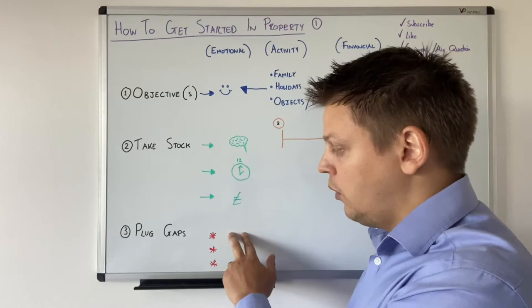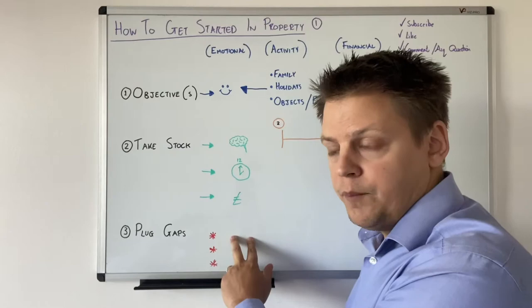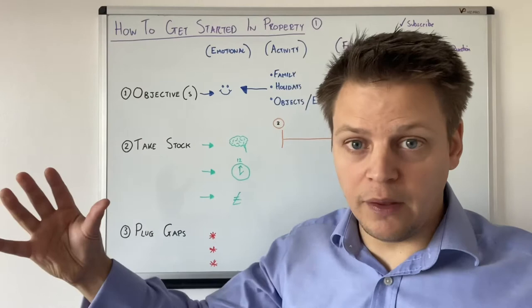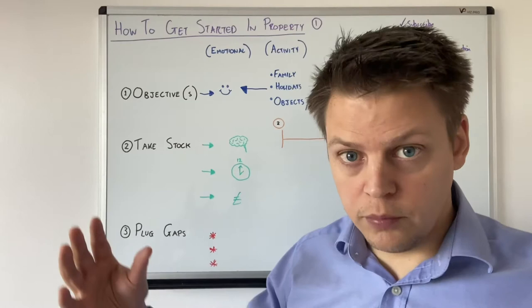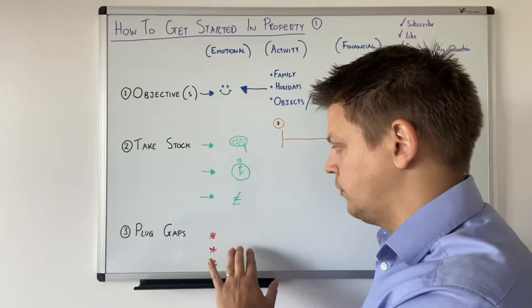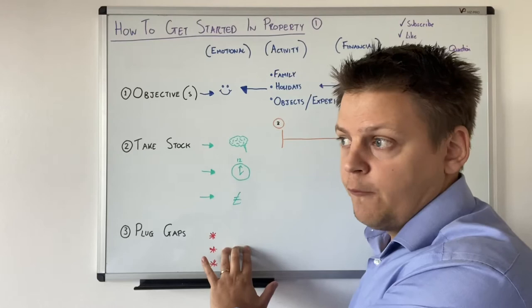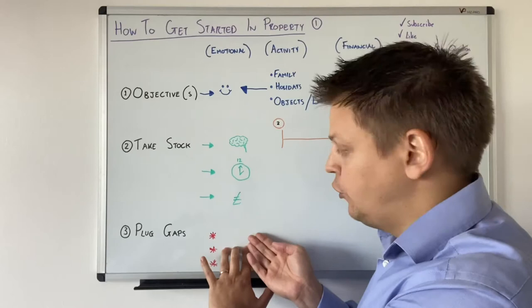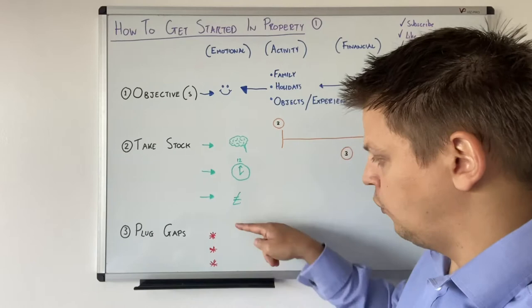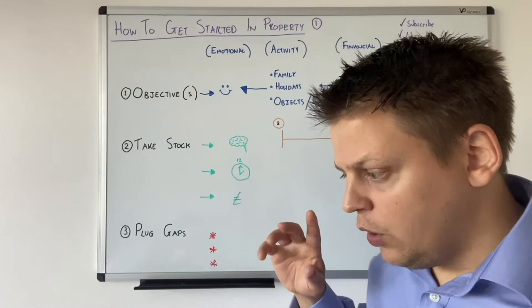Then the next thing you're going to do is plug the gaps in relation to these three things. Start with what you don't know — start learning, start knowing. You don't have to know absolutely everything about buy-to-let property investment, but you need to know enough to start taking meaningful action. If you haven't got time, think about working with sources who can use their time to bring you property opportunities for you to put your money into. Plug your knowledge gaps, time gaps, and financial gaps.